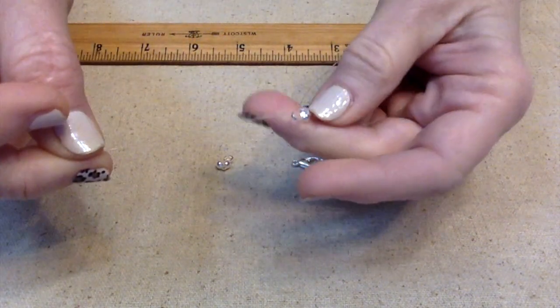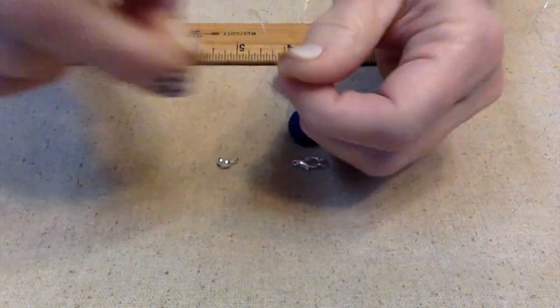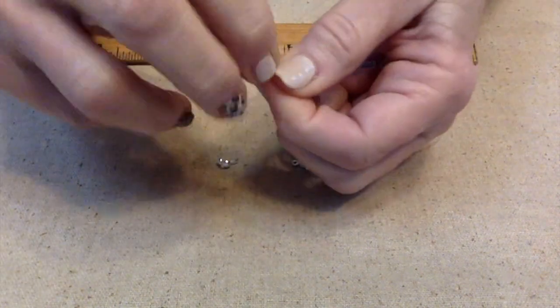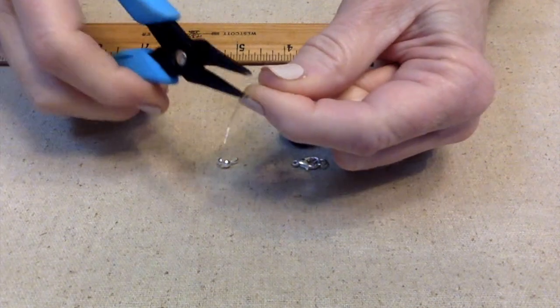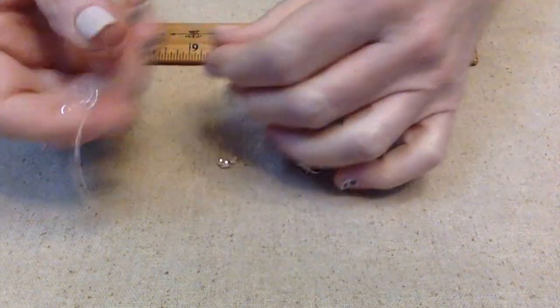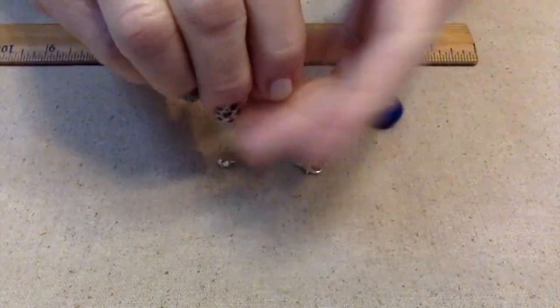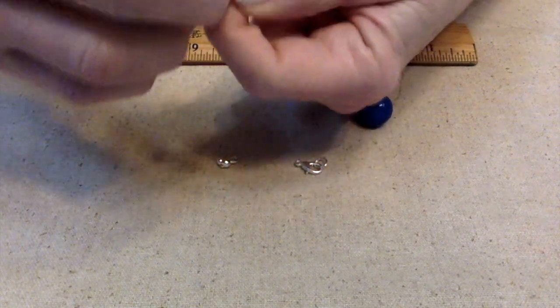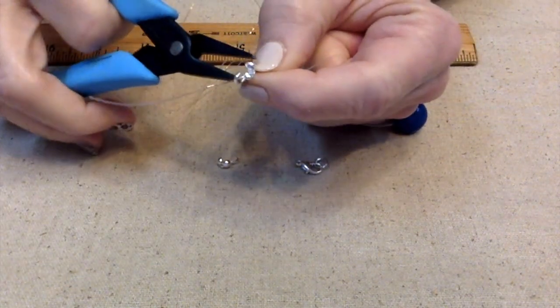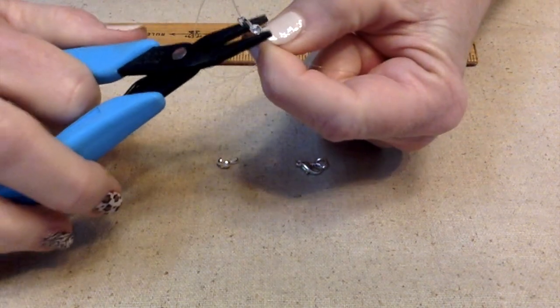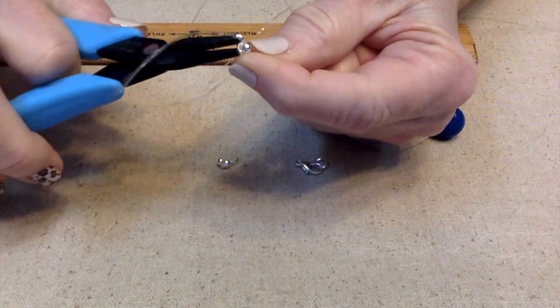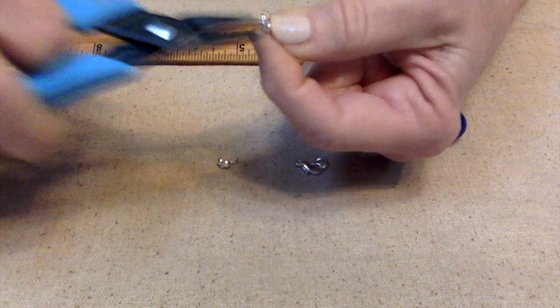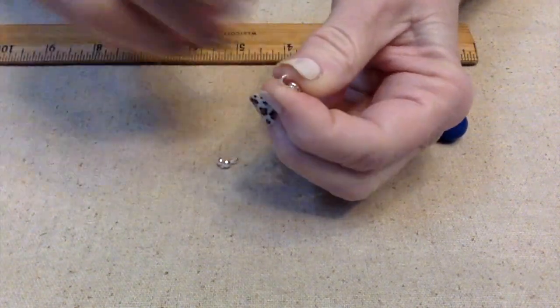The way I do it is I just string that on. I tie two knots. Make sure they're tight and on top of each other. Then I slide my clamshell onto the knot. Make sure it's inside there.